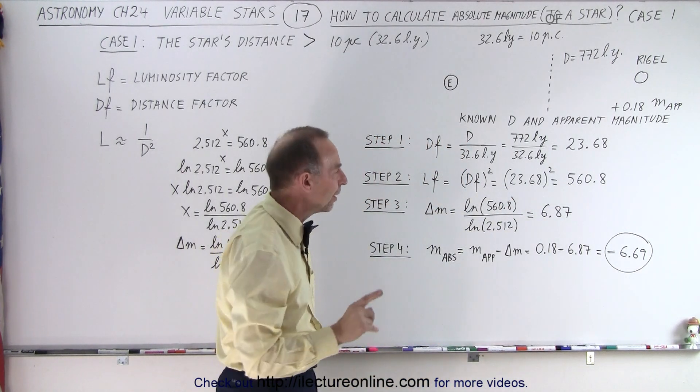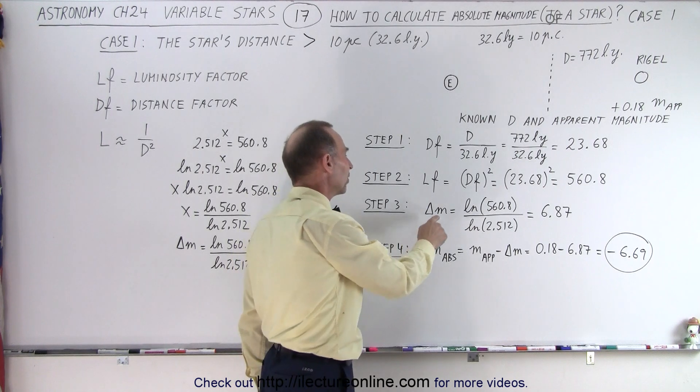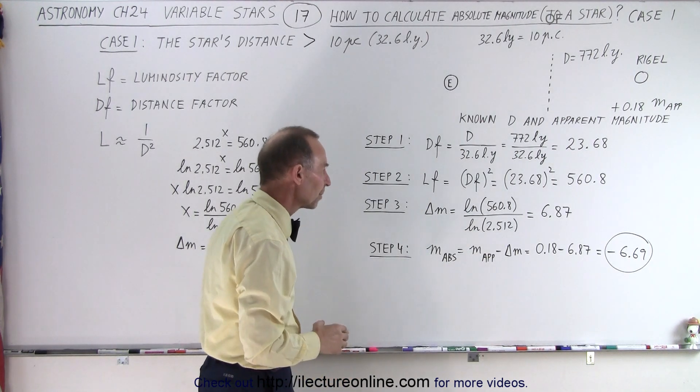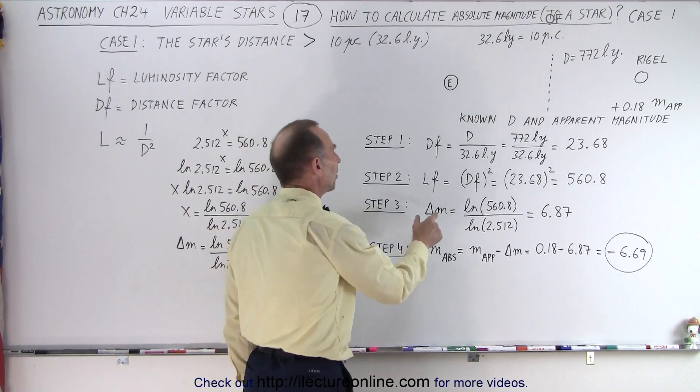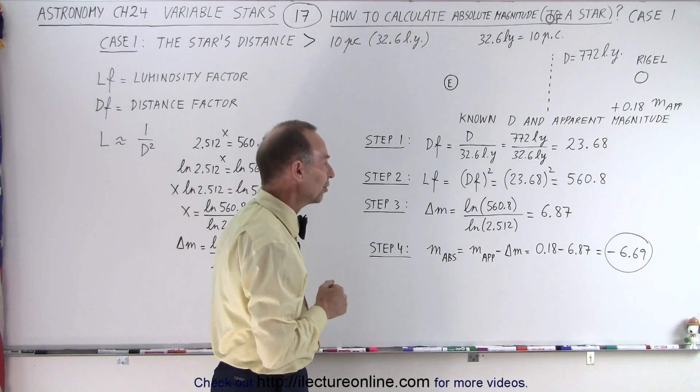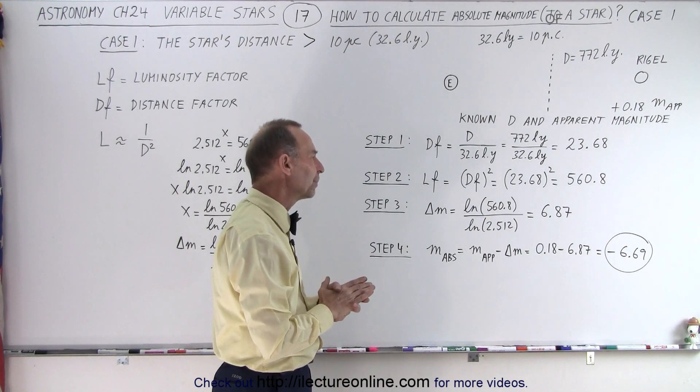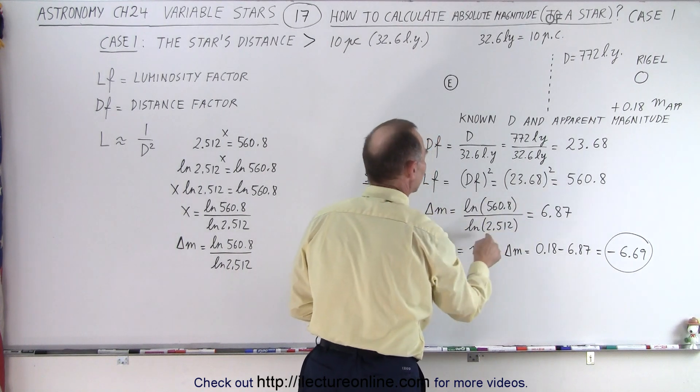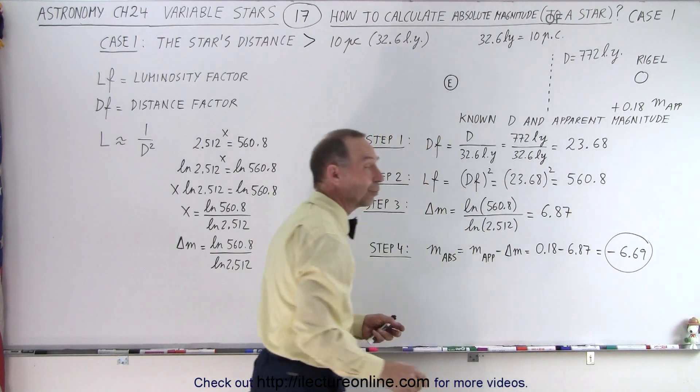Notice we don't get the same number, because ultimately, we're going to solve for the delta M before we solve for the magnitude itself. So, the next thing we're going to do is find the difference in the magnitude between absolute and apparent magnitude. Now, how do we do that? Why is it the natural log of 560.8 divided by the natural log of 2.512?